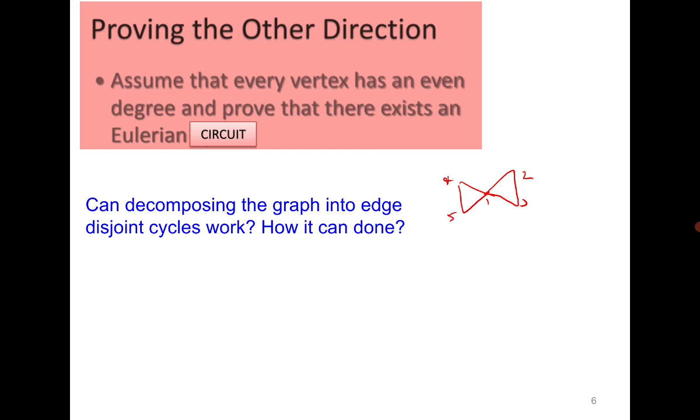For example, this one. You can see that it can be decomposed into two edge disjoint cycles. The approach you can use is that you identify a cycle which is 1, 2, 3. Then you delete all the edges of this cycle. You have the remaining cycle as 4, 5, 1, which can be written as 1, 2, 4, 5, and 1. Then you can replace it here. So you will have 1, 4, 5, 1, 2, 3, and 1. And this is a closed trail.